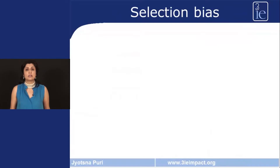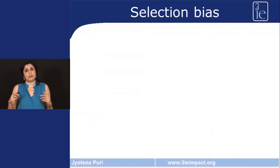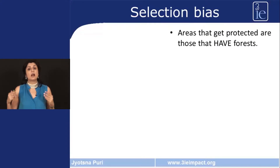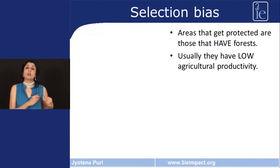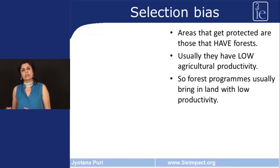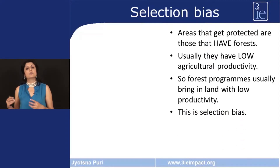There is another challenge with impact evaluations of these programs: a lot of them suffer from what is called selection bias. Using the example of forestry programs, areas that get protected are those that have standing forests — meaning they have not been cleared for agriculture. That means they have low agricultural productivity and low agricultural profitability. So forest programs usually bring in land with low agricultural productivity, and this is the problem of selection bias.